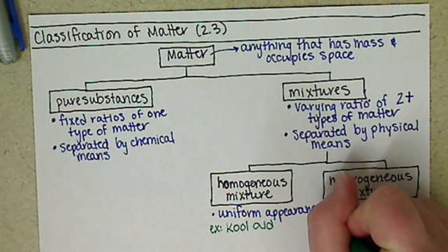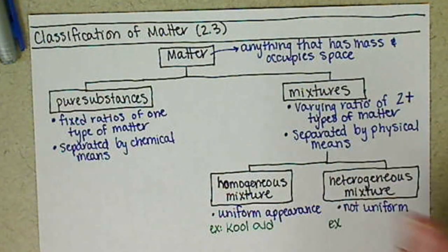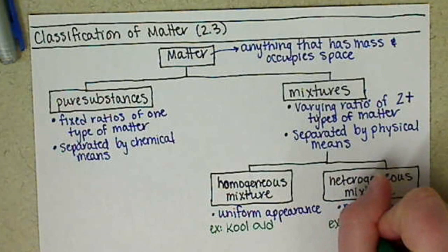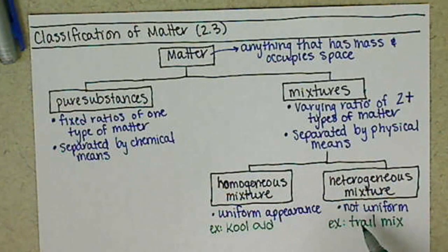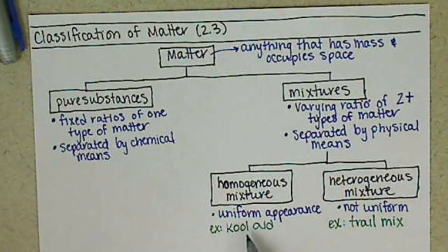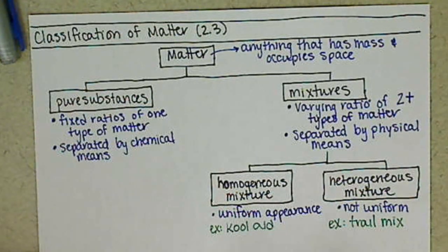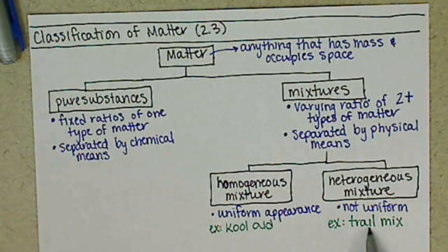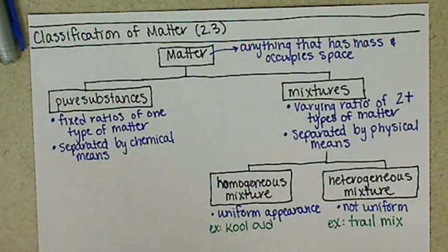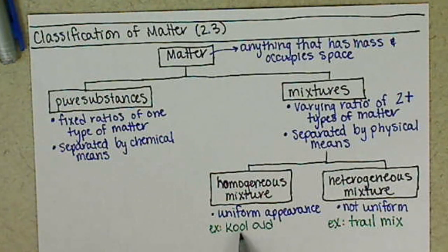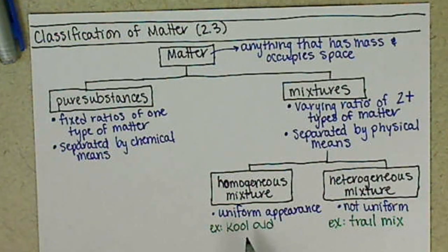An example of a heterogeneous mixture, I always like to use trail mix. Basically how we can distinguish between these two is if we were to take a big batch of Kool-Aid and a big batch of trail mix and we separated them out, say I had you all in class, we could divvy them out. Each cup of Kool-Aid is going to be the same.